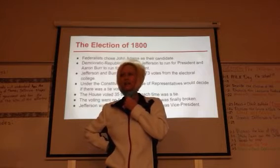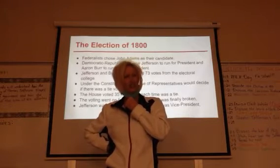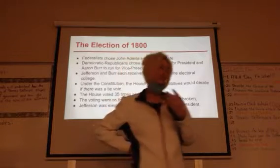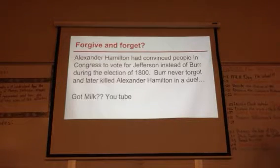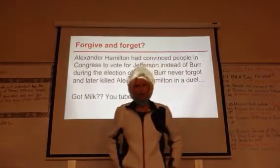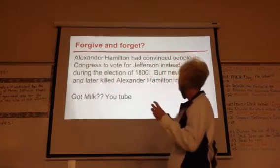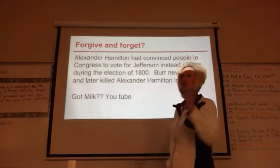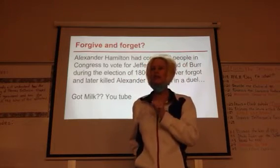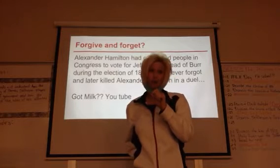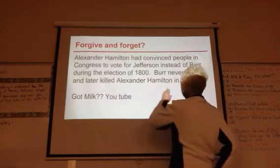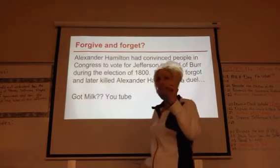What suddenly makes somebody decide to change those votes after 35 tries? Something did happen. Alexander Hamilton, the former Secretary of the Treasury, got in touch with members of Congress and basically convinced them to swing the Federalist vote to Thomas Jefferson. You see, Alexander Hamilton didn't like Thomas Jefferson, but he liked Aaron Burr even less. And this made Aaron Burr very, very upset with Alexander Hamilton.